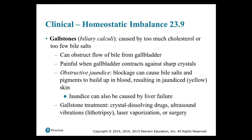Large gallstones can be problematic. Obstructive jaundice occurs when blockage causes bile salts and pigments to build up in the blood, resulting in yellow skin. Jaundice can also be caused by liver failure — as we mentioned when studying the integumentary system. Gallstone treatments include crystal-dissolving drugs, ultrasound vibrations, laser vaporization, or surgery.